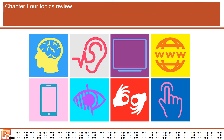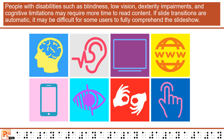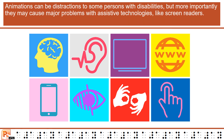Chapter 4 Topics Review. People with disabilities such as blindness, low vision, dexterity impairments, and cognitive limitations may require more time to read content. If slide transitions are automatic, it may be difficult for some users to fully comprehend the slideshow. Animations can be distractions to some persons with disabilities, but more importantly they may cause major problems with assistive technologies, like screen readers.